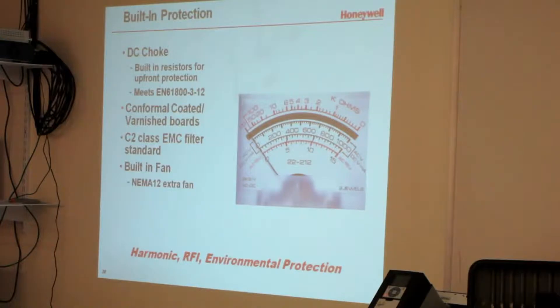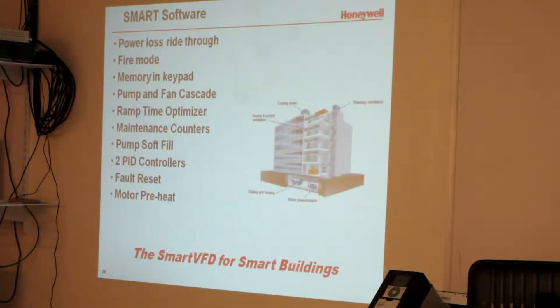There's a DC choke, built-in resistors for protection for the circuitry. The boards are coated to keep fungus from growing on them and wearing them out. There is a C2 commercial class EMC filter to keep the radio noise out and a built-in fan. NEMA 12 has an extra fan inside for pressure cooling. NEMA 12 are no bigger than the NEMA ones.